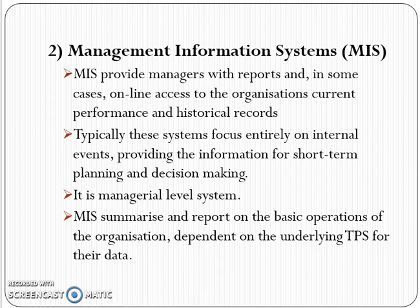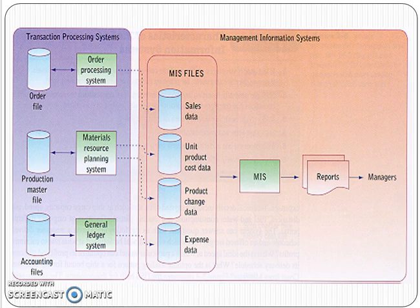Looking at the functional block diagram of MIS: it collects information from the Transaction Processing System, then organizes all information with respect to different functions. Sales data is stored in a systematic sales file, unit product cost is stored in the product file, along with product change data and expense data. MIS reports are then generated and made available for managers to take appropriate decisions.